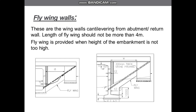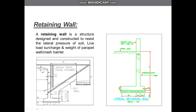Next we will be discussing about the retaining wall. The retaining wall is used when the embankment is high. It has its own foundation and is provided after the fly wing or the return wall, if required.